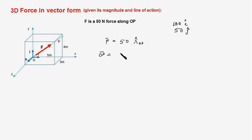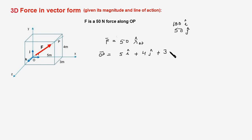When we go from O to P, we see that we increase by five units along the x-axis, so we say it is 5 times i-hat. We travel four units along the y-axis, so we add 4 j-hat. And we travel three units along the positive z-axis, so we say it is 3 k-hat. This is the position vector OP.